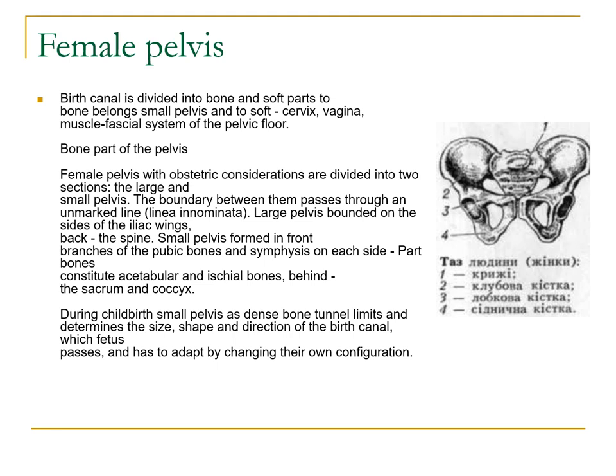Our birth canal is divided into the bony and soft parts. The bony part belongs to the small pelvis, and the soft part includes the cervix, vagina, and the muscle fascial system of your pelvic floor. The bony part of the pelvis with obstetric considerations is divided into two sections, the large and the small pelvis. The boundary between them passes through a line called your linea inaminata.